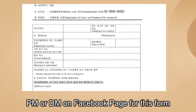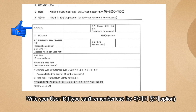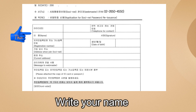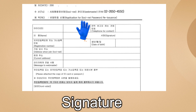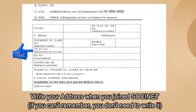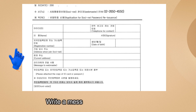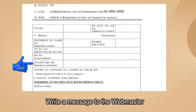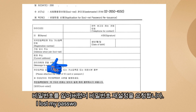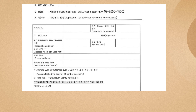On the form, write the date, then your user ID — if you can remember it, use the ID Chatgi option we did earlier. Write your name, contact number, signature, date of birth, and the address you used when you joined Sosinet if you remember. Then write your current address and write a message to the webmaster.